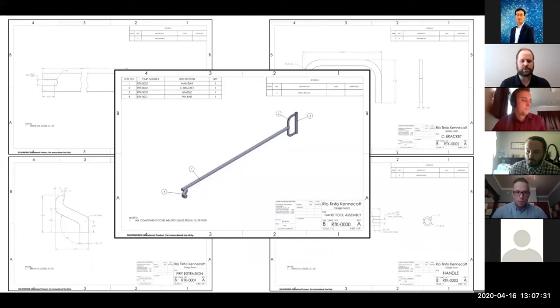Here are the professional drawings that we will be providing to Rio Tinto for our modified hand tool. Front and center is the assembly view. Behind in the four quadrants is each of the components and their individual drawings to be manufactured to.